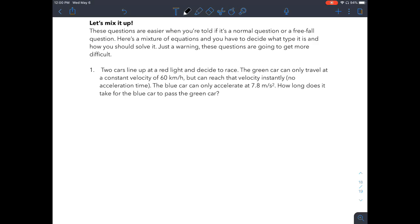But if we get into the question a little bit, we're going to realize that it follows a little bit of a different procedure. So we've got two cars lining up and they decide to race. We have a green car that can only travel at a constant velocity of 60 kilometers an hour, but it reaches that velocity instantly. So we've got no acceleration for that car. Then we have a blue car that can only accelerate at 7.8 meters per second squared. So we want to figure out how long does it take for the blue car to pass the green car?